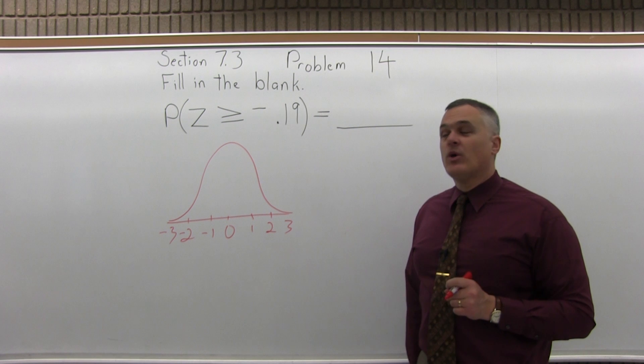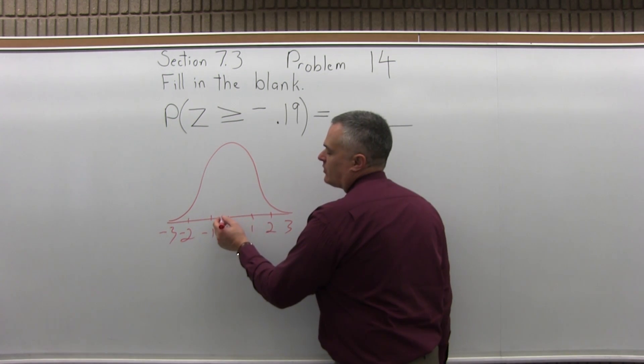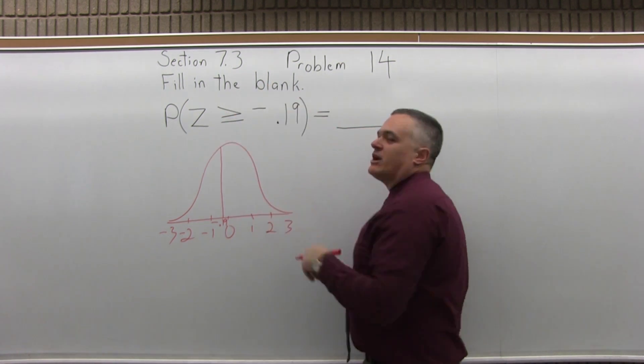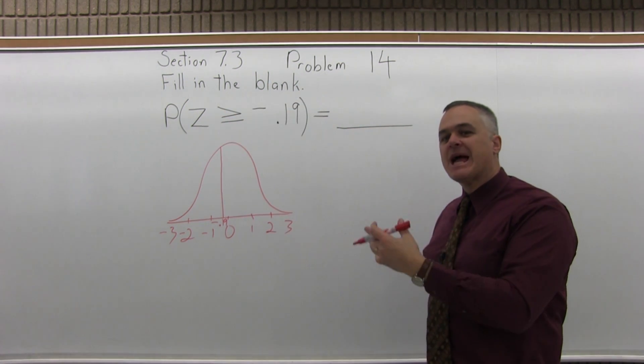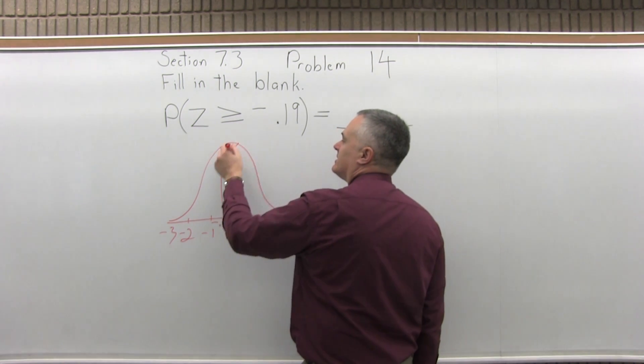So negative .19, between 0 and negative 1, maybe about that far out, we would have negative .19. And I want the probability of being greater than or equal to that. So that's the stuff that comes afterwards or to the right of the negative .19. So I'll shade that in.